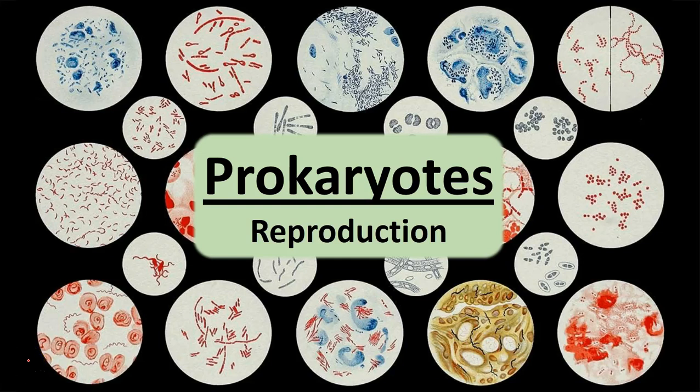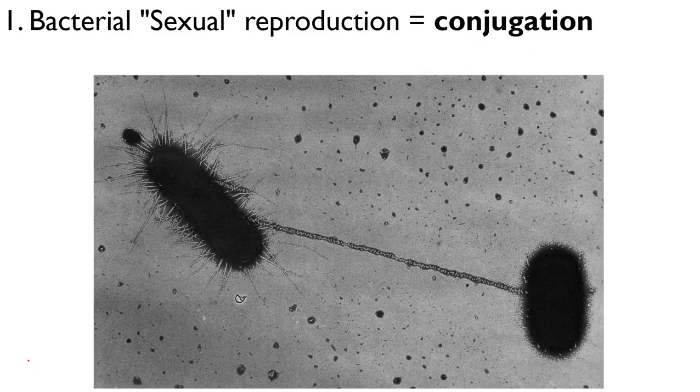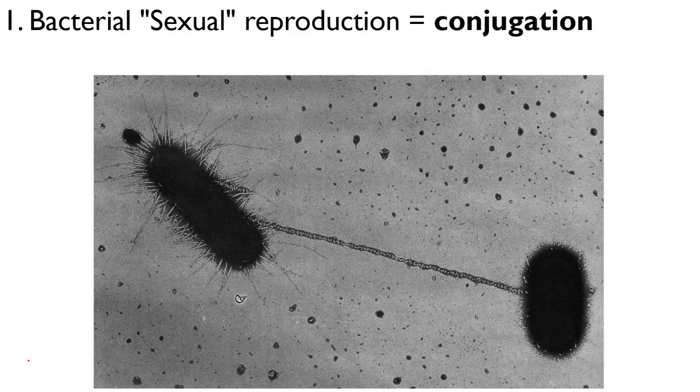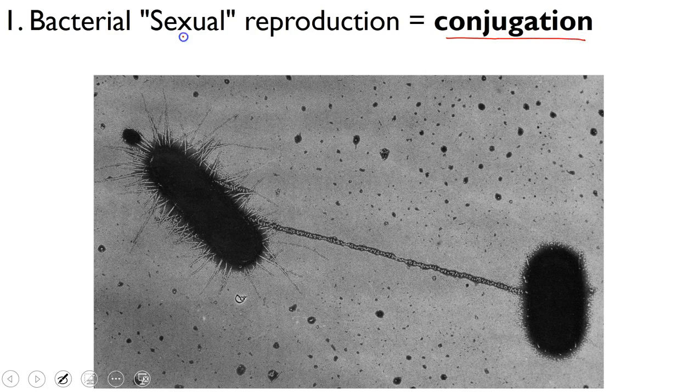Welcome to our second lecture on prokaryotes. In this lecture, we will take a look at how bacteria reproduce. We will start with bacteria's sexual reproduction, which is called conjugation. I've got sexual reproduction in quotation marks because this isn't true sexual reproduction the way that meiosis and fertilization work, which we'll see in just a minute.